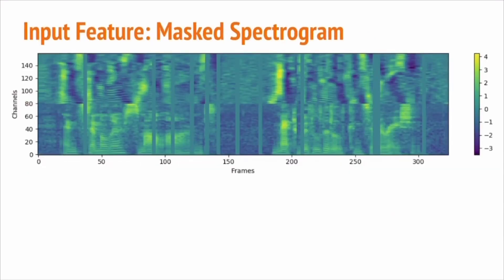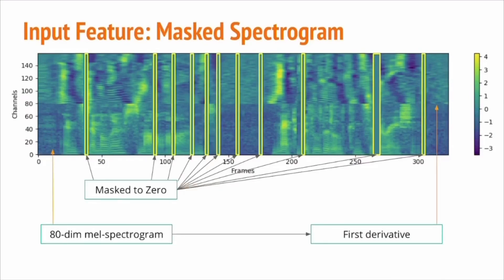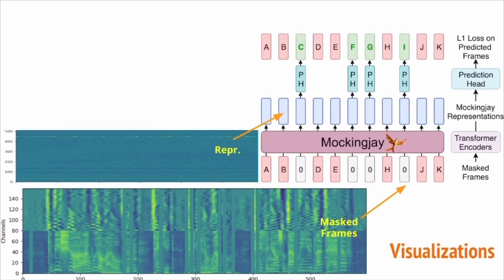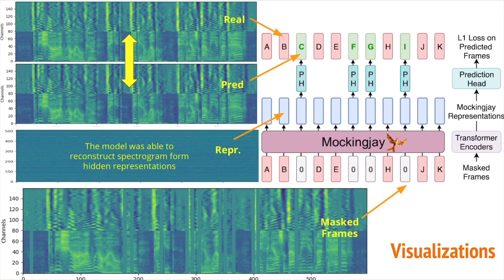To sum up the proposed pre-training task, we show some illustrations of how the input features look. We use 80-dimensional mel spectrogram with its first derivative. The masked frames are highlighted in yellow. The model takes masked frames as input and generates intermediate representations. Then the model predicts and reconstructs the original frames, with L1 loss used to compute the reconstruction error. Note that the predicted frames and real frames look almost identical, while the hidden representation looks nothing like them.